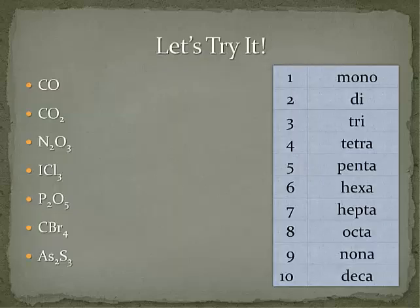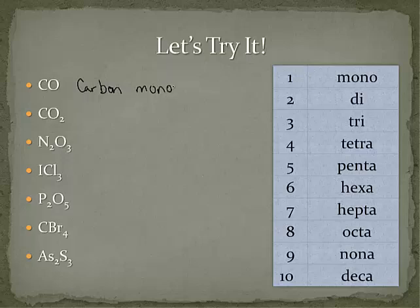Let's try it. Here we have one carbon atom and one oxygen atom. Carbon comes first, there's only one, and since we don't use mono for the first element, we just write carbon. There's also only one oxygen, but since it's the second element we do use the prefix mono, and it needs an -ide ending — so instead of oxygen we write monoxide, giving us carbon monoxide. The next molecule is similar except it has two oxygens, so we would name it carbon dioxide.